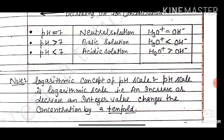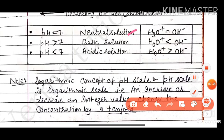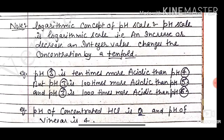If the pH is equal to 7, then the solution is neutral — that is, the H3O+ (protonium ion) concentration and OH- concentration are equal. If the pH is greater than 7, then H-ion concentration is less than the OH- concentration, so the solution is basic. And when H-ion concentration is maximum, the solution is acidic.